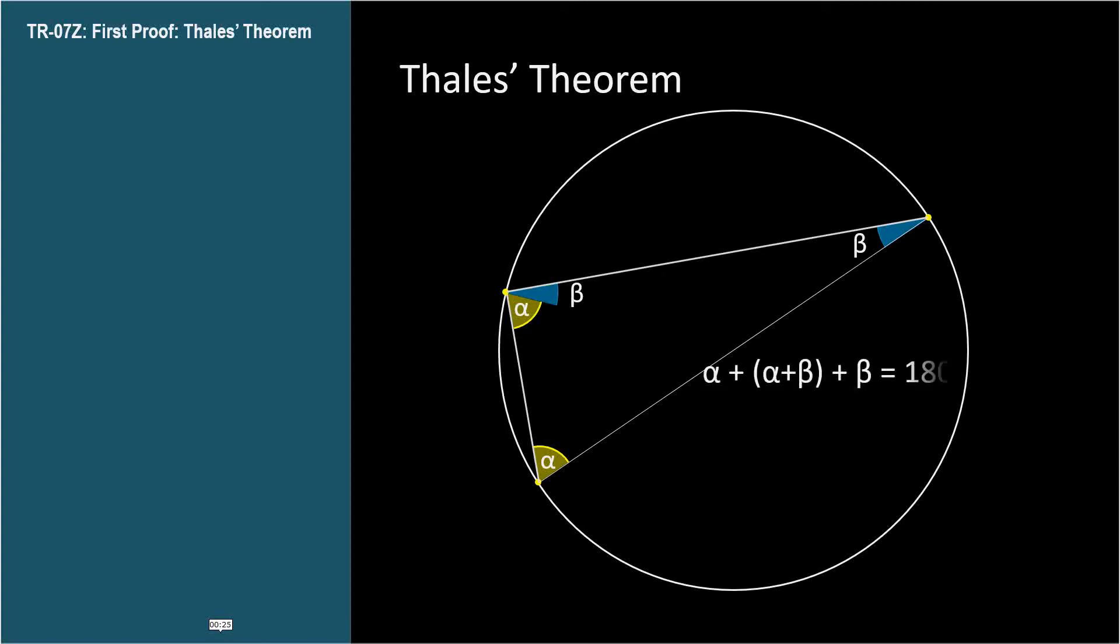We also know that the angles in a triangle add up to 180 degrees. So alpha plus beta plus alpha plus beta equals 180 degrees. Let's collect our terms. 2 alpha plus 2 beta equals 180 degrees. Divide both sides by 2. Alpha plus beta equals 90 degrees.